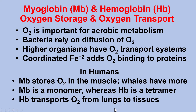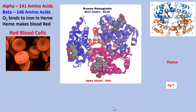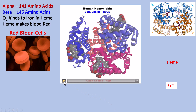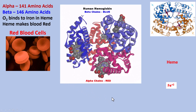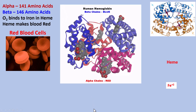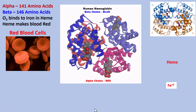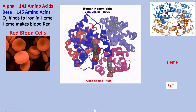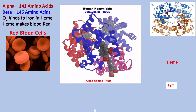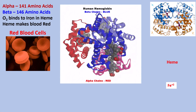In humans, myoglobin stores O2 in the muscle. Whales have a lot more myoglobin than humans. Myoglobin is a monomer, whereas hemoglobin is a tetramer — four subunits. Hemoglobin transports O2 from the lungs to the tissues. The alpha chains are slightly shorter than the beta chains, and they differ slightly in amino acid sequence, but are pretty close.